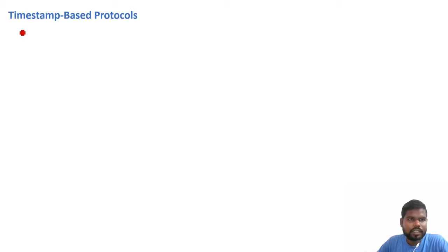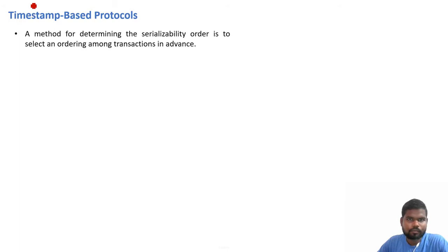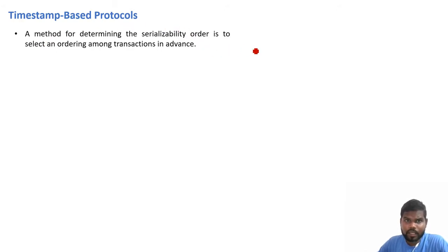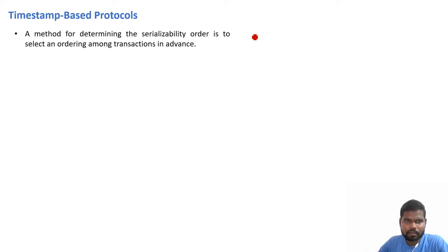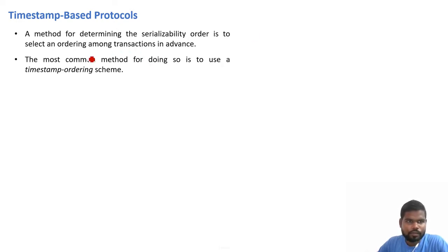In this lecture we'll study timestamp-based protocols. A method for determining the serializability order is to select an ordering among transactions in advance. In timestamp-based protocols, the order of transactions is selected in advance — which transaction will be executed first and which will be executed later in a schedule is decided in advance. The most common method for doing so is to use a timestamp ordering scheme.